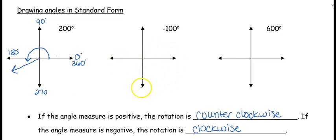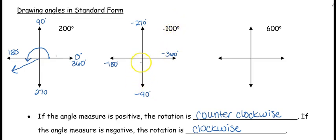Going this direction first: this is negative 90, negative 180, negative 270, and negative 360. So if I want to go 100 degrees, I'm going to go just 10 degrees past that negative 90. We're always starting at zero — it's just a matter of which direction you go. So we're going to be rotating clockwise for a negative angle measure. Showing which way you rotate is a part of the graph.